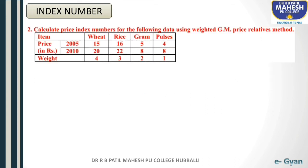Let us take the next example. After weighted arithmetic mean, the next method is weighted geometric mean. Calculate price index numbers for the following data using the weighted geometric mean price relatives method. Items given: wheat, rice, gram, pulses, with prices for 2005 and 2010. The weights given are 4, 3, 2, 1.